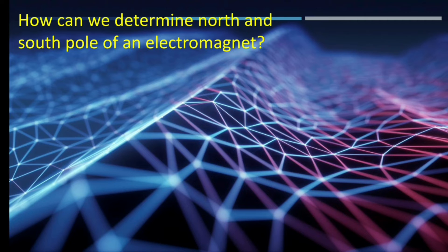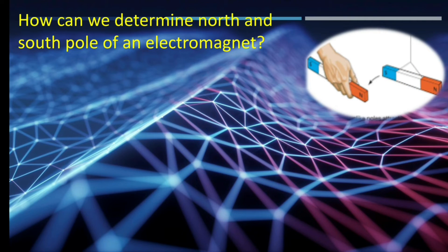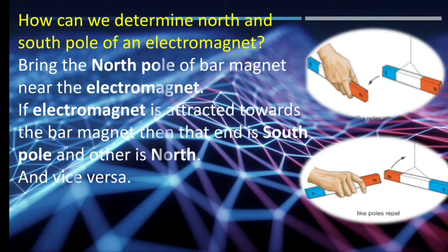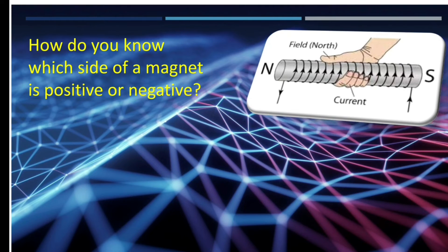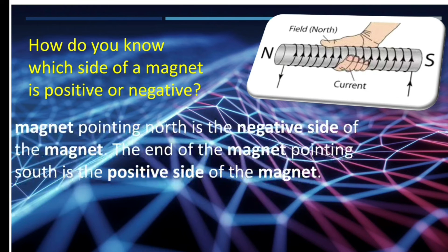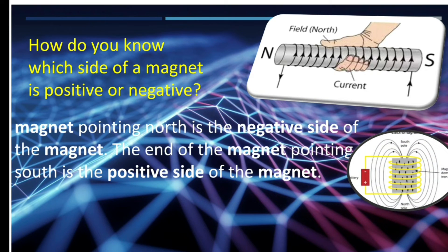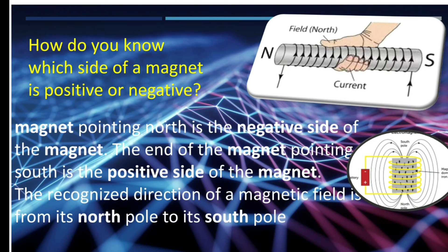How can we determine the north and south pole of an electromagnet? Bring the north pole of a bar magnet near the electromagnet. If the electromagnet is attracted towards the bar magnet, then that end is the south pole and the other is the north pole, and vice versa. The end of the magnet pointing north is the negative side, and the end pointing south is the positive side. The recognized direction of a magnetic field is from its north pole to its south pole.